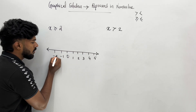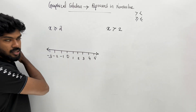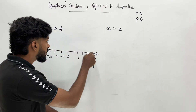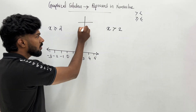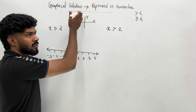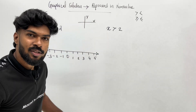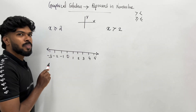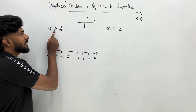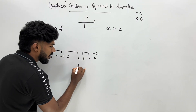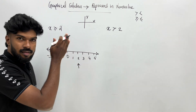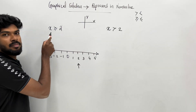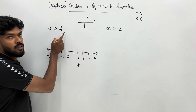Now, minus 1, minus 2, minus 3 — this is equal to 2. The y-axis is equal to 1. If x is equal to 1, then the x-axis will be equal to 1. The x-axis will be equal to 2. The number is equal to 2, if x is equal to 2.